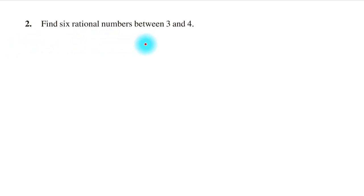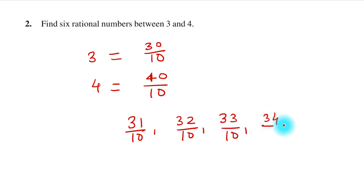Coming to question number two: Find six rational numbers between three and four. We need to find six rational numbers between 3 and 4. You can write 3 as an equivalent fraction, 30/10, and 4 as 40/10. Since the denominator is the same, we can take any six numbers between 30 and 40 in the numerator with denominator 10. We can write: 31/10, 32/10, 33/10, 34/10, and 35/10. You can also write 36/10.